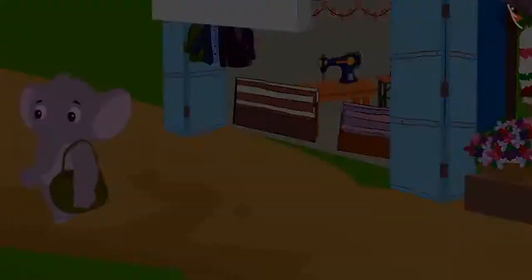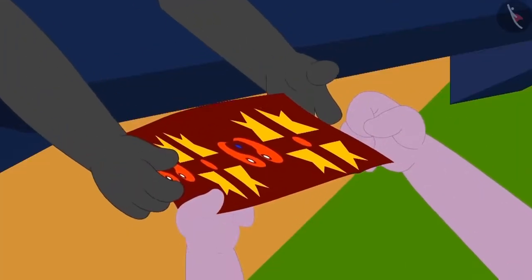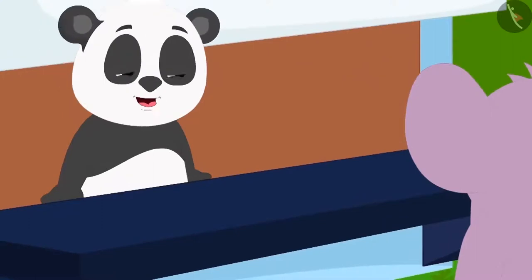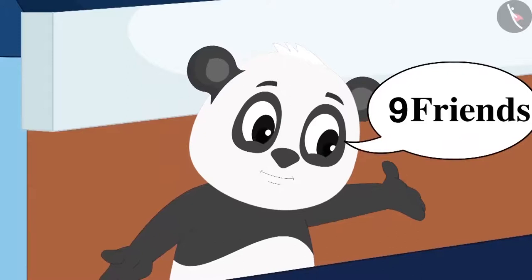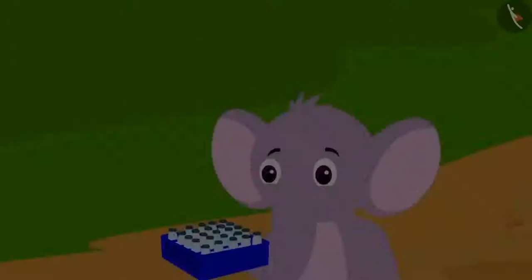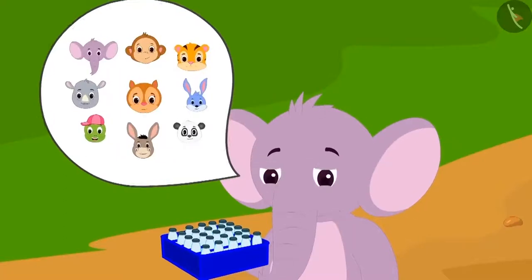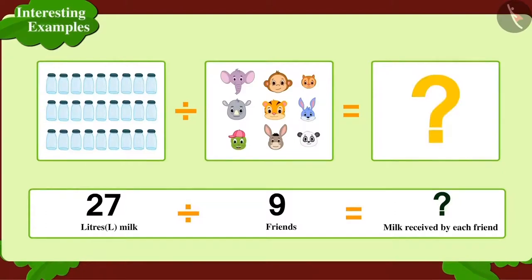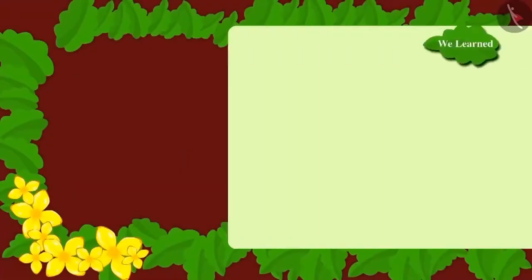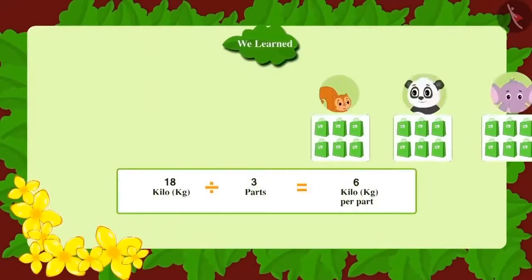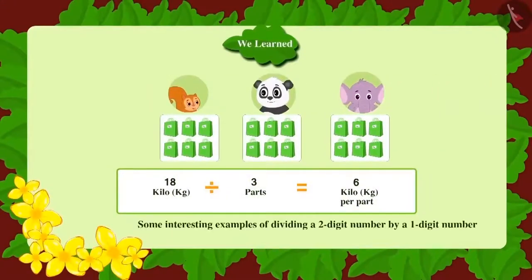Golu gave Appu 27 litres of milk, saying that all 9 friends would equally share the milk. Each of Appu's friends will enjoy 3 litres of milk. Children, in this lesson we saw some interesting examples of dividing 2-digit numbers by 1-digit numbers.